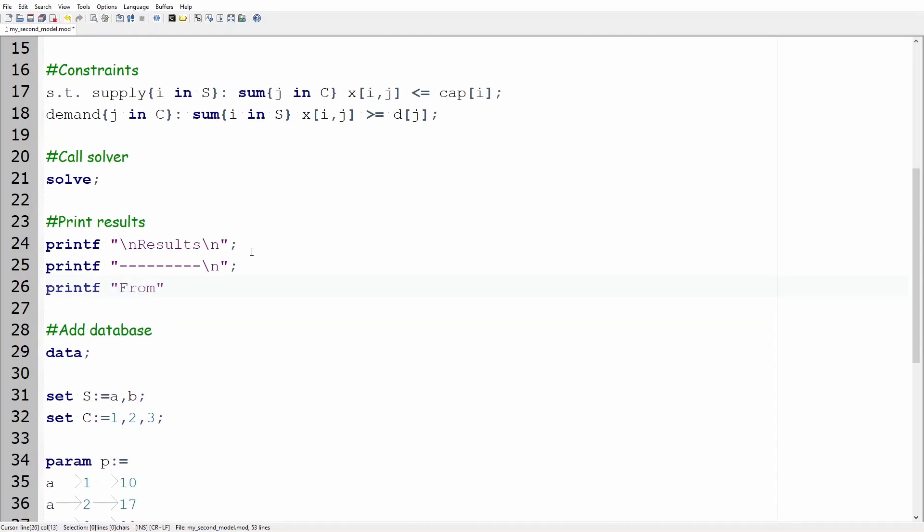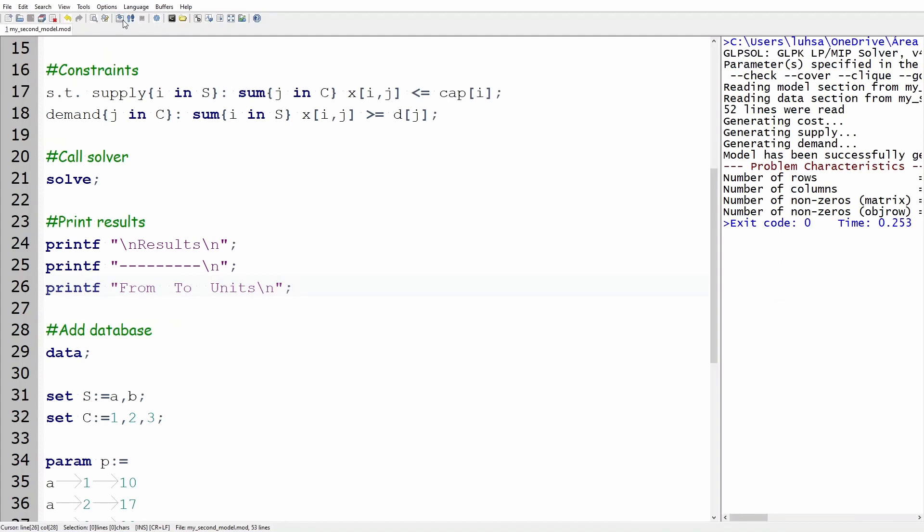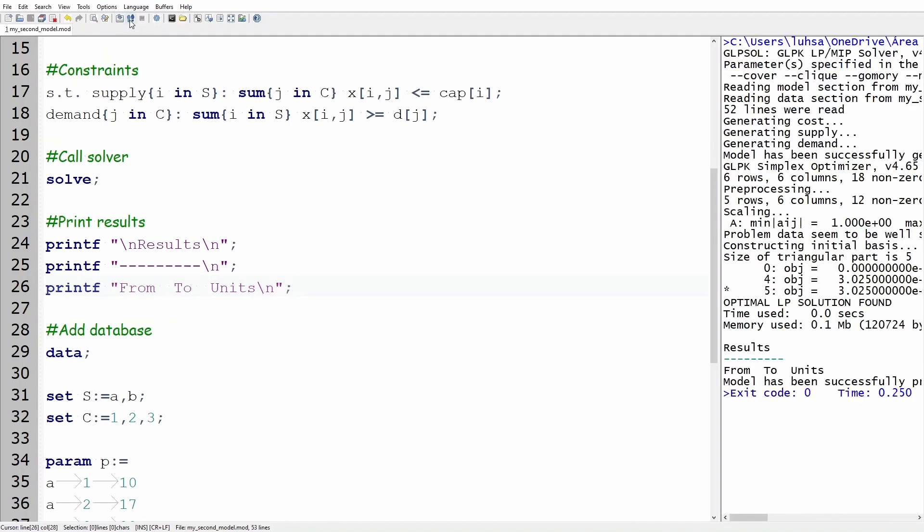The next step is to create the table. Type printf and within quotation marks write from, add two spaces, to, three spaces, units, backslash n and semicolon. Let's compile and see what it looks like. Cool, we started to structure our table.